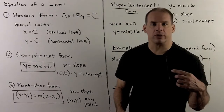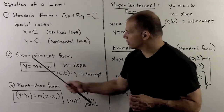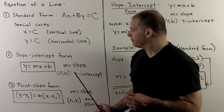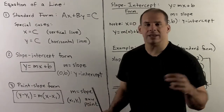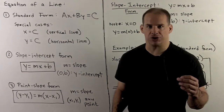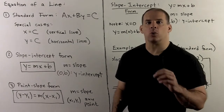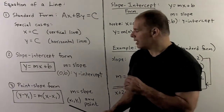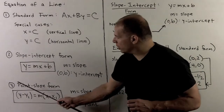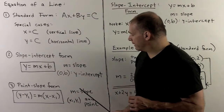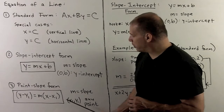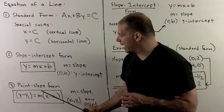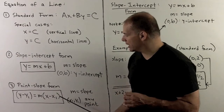We have two other forms of interest. We have slope-intercept form: y equals mx plus b, where m is the slope and (0, b) is the y-intercept. This is the equation we focus on for this part. Then we'll see point-slope form, where we're given the slope and any point on the line: y minus y1 equals m times x minus x1.